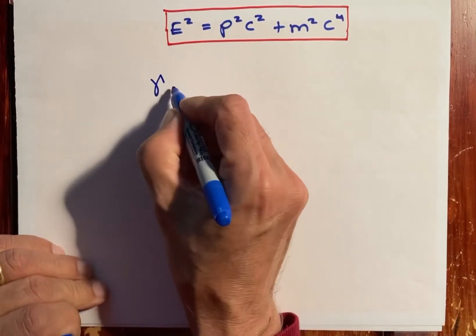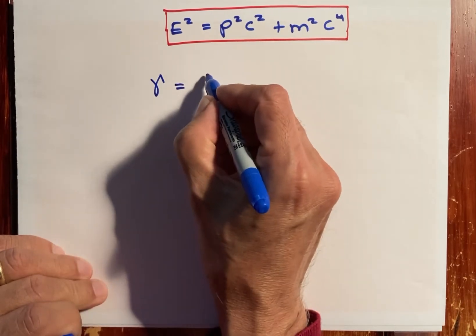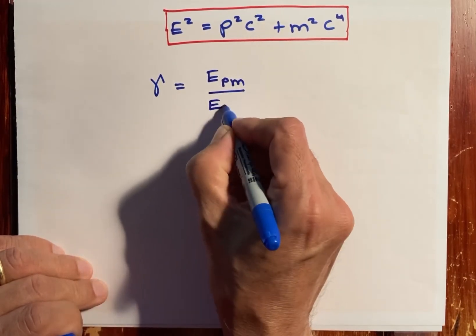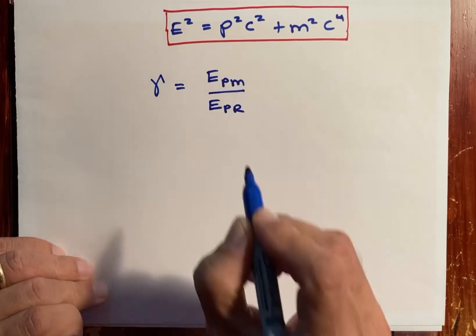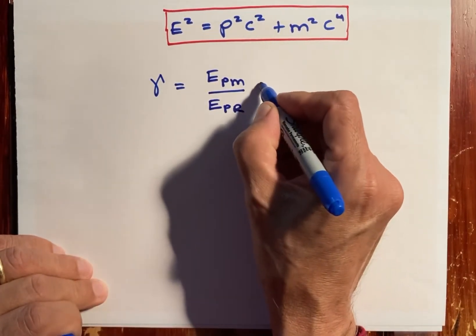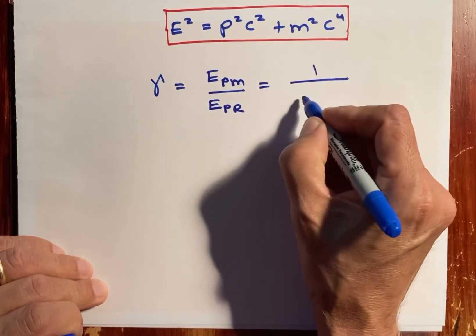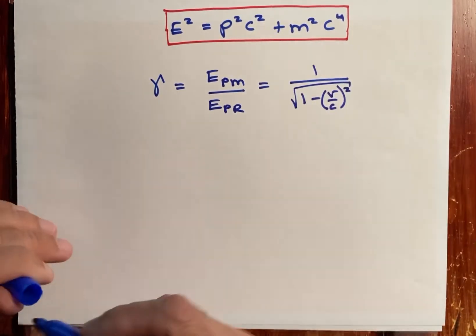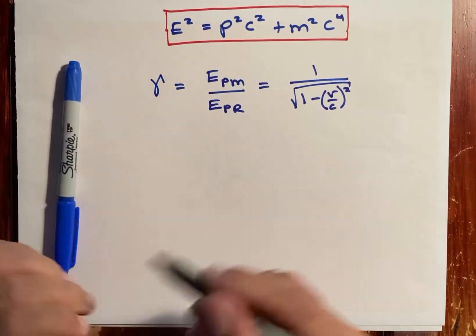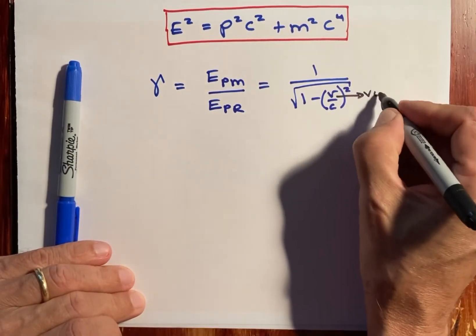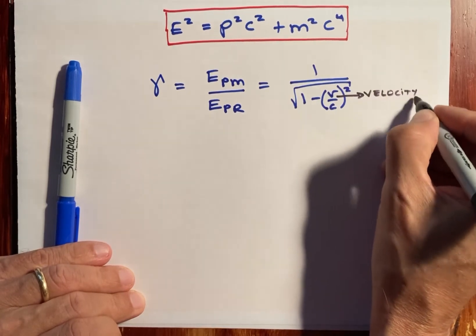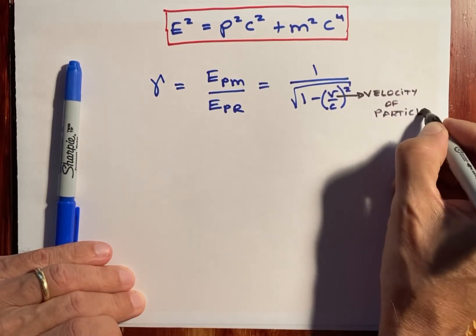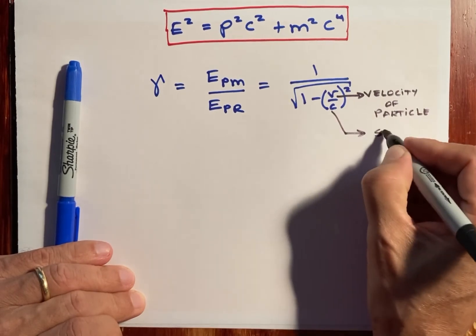We start with a constant gamma, which we define to be the energy of the particle in motion divided by the energy of the particle at rest. That ratio is defined to be gamma. Furthermore, we also say that gamma is equal to this expression. Here, v equals the velocity of the particle, and c is the speed of light.